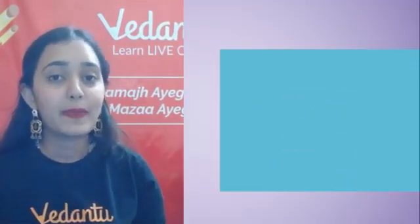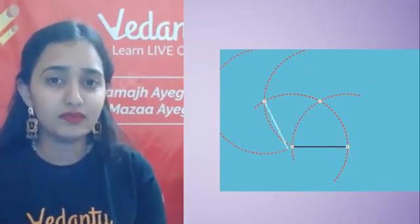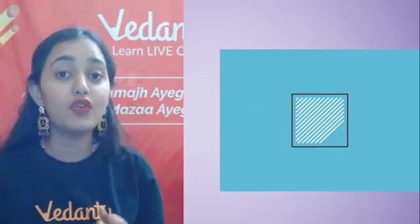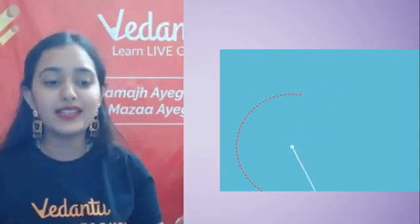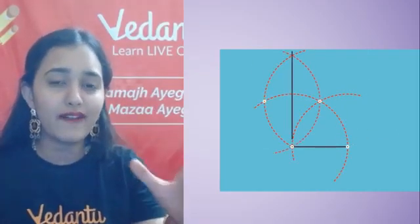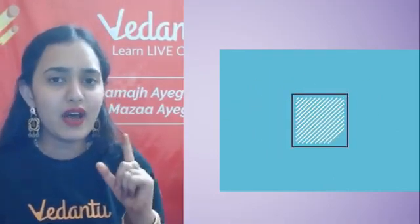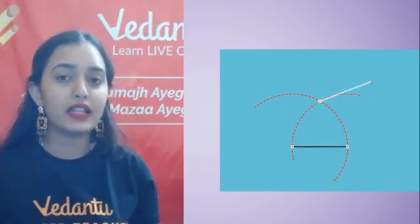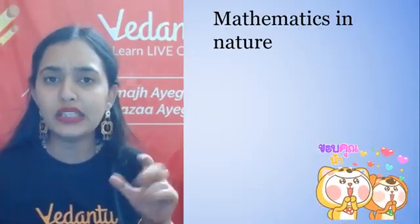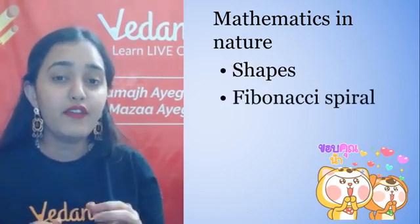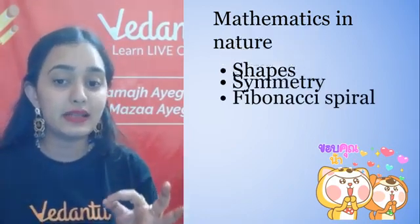Maths na sirf humein yeh batata hai ki yeh jo phool humein dikhaayi dete hain, woh khoobsurat hote hain, beautiful hote hain — balki woh humein yeh bhi batata hai ki yeh jo ped hai woh itna lamba kyun hota hai, yeh jo patthar hai woh itna symmetrical kaise hota hai. Aaj main aapko teen basic cheezein dikhaungi jahan maths chupa hota hai hamare nature mein: shapes around us, Fibonacci spirals around us, and symmetry around us.